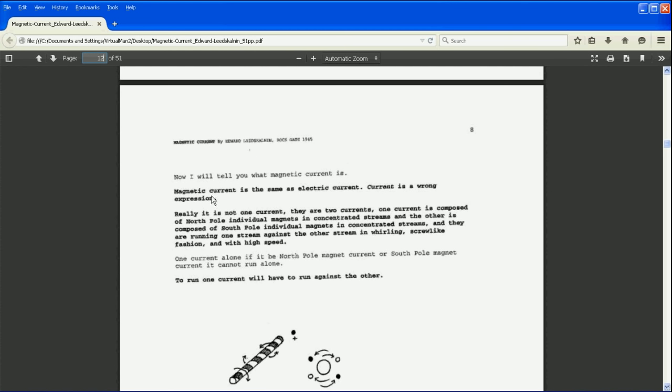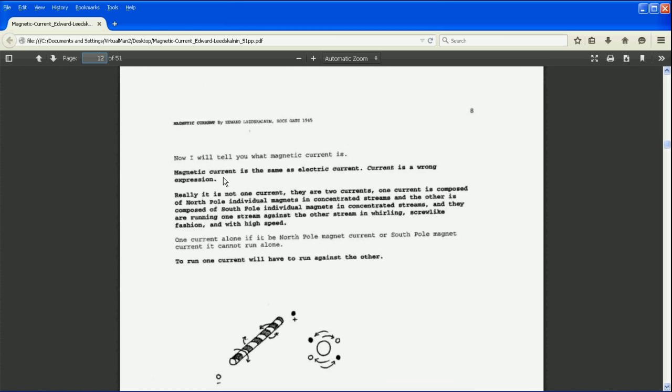On page 12 he describes what a magnetic current is. Magnetic current is the same as electric current - current is the wrong expression. He believes there's two currents, one composed of north individual magnets and the other one composed of south individual magnets, and they're coming out in concentrated streams running against each other. This theme of clockwise and counterclockwise again.